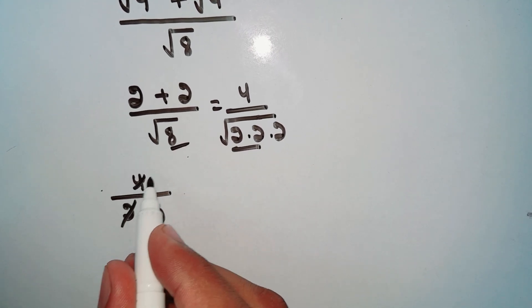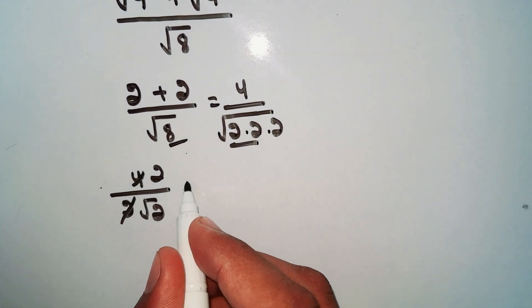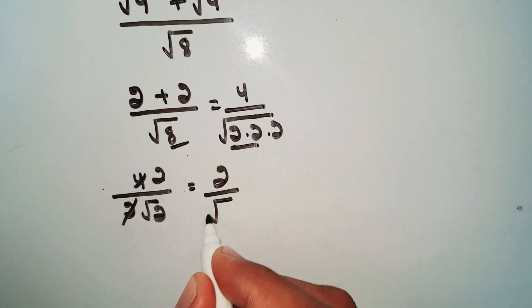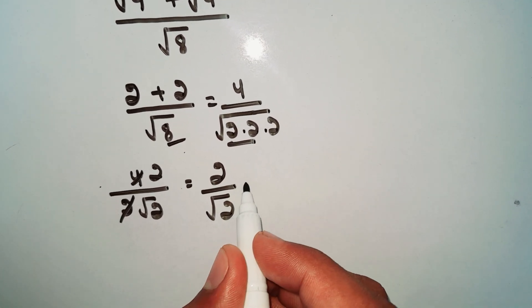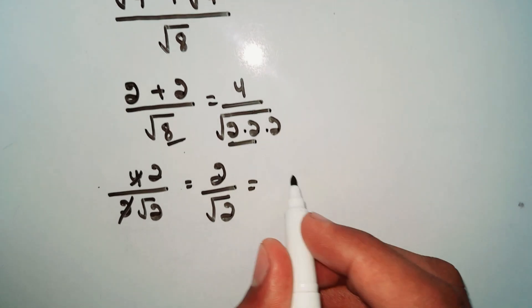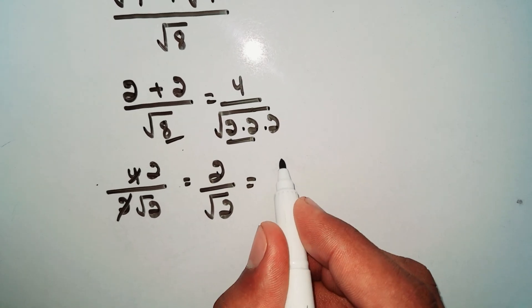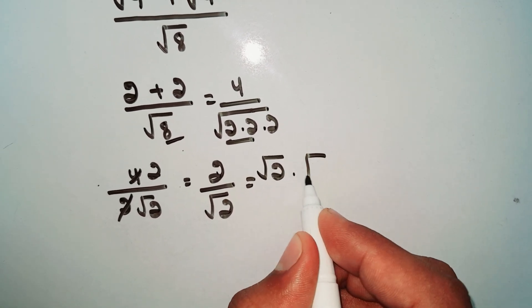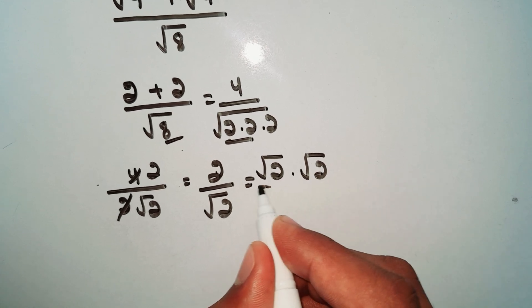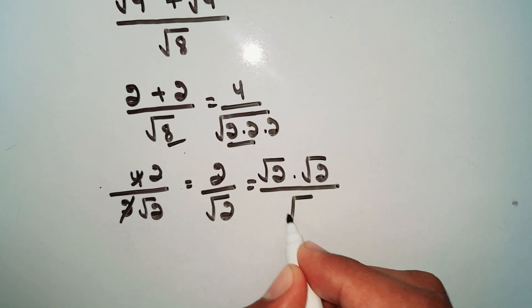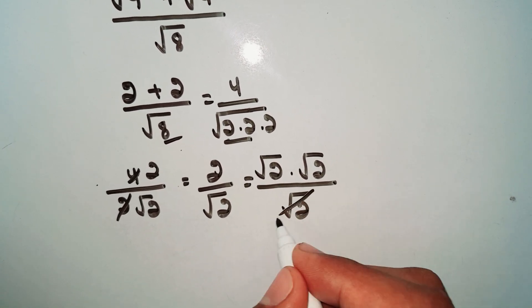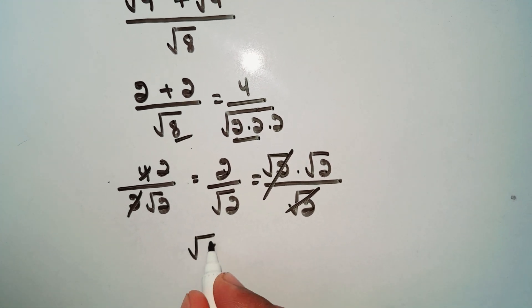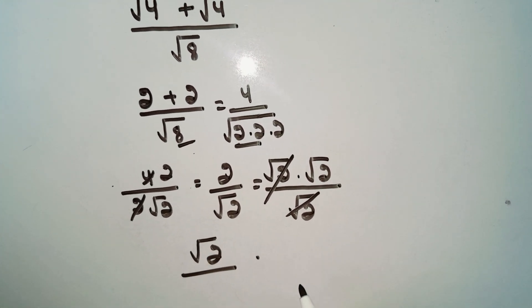We simplify 4 over 2, giving us 2 upon square root 2. Now we rewrite 2 as square root 2 multiplied by square root 2, divided by square root 2. The square root 2 cancels, so square root 2 is our answer.